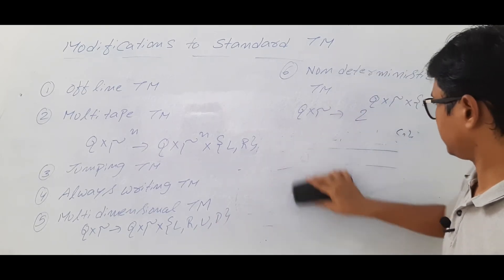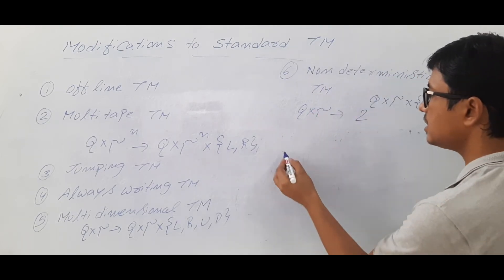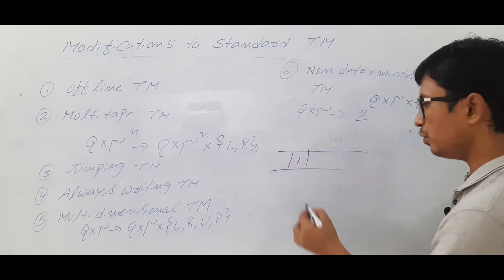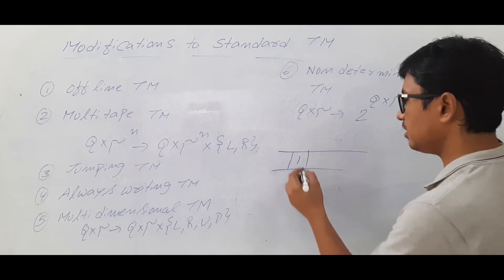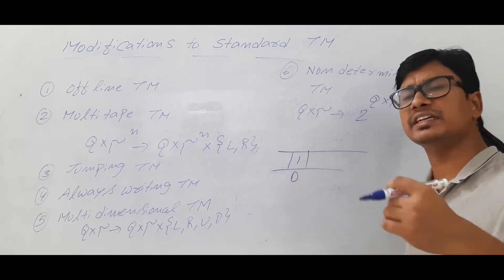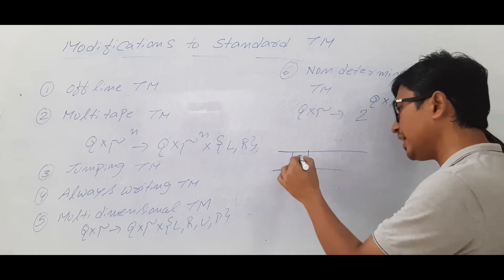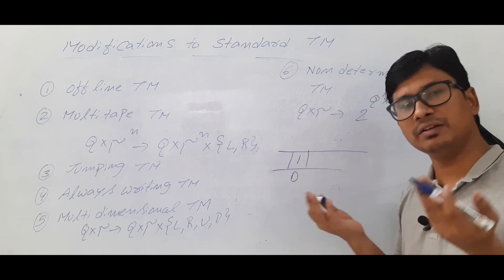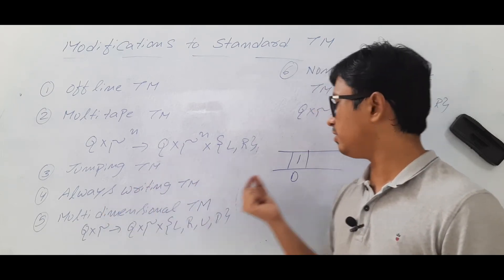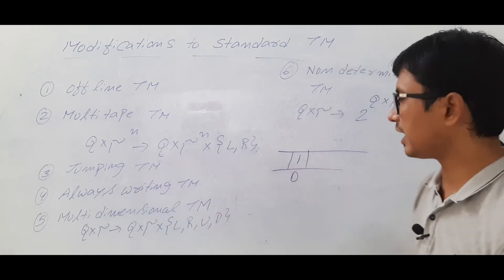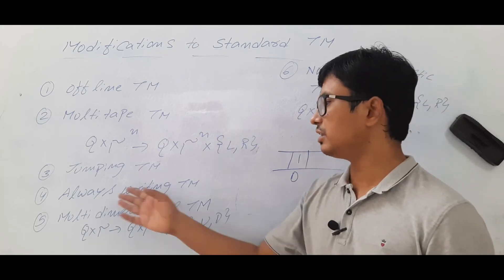The next suggestion is the always-writing Turing machine. Sometimes in a standard Turing machine, we see a '1' and leave it as '1' without any write operation. What this modification says is that if there is a '1', instead of leaving it, you must explicitly rewrite it as '1'. Whether you leave it or rewrite it, it is still '1' — there is no difference. So the power of the Turing machine remains the same.